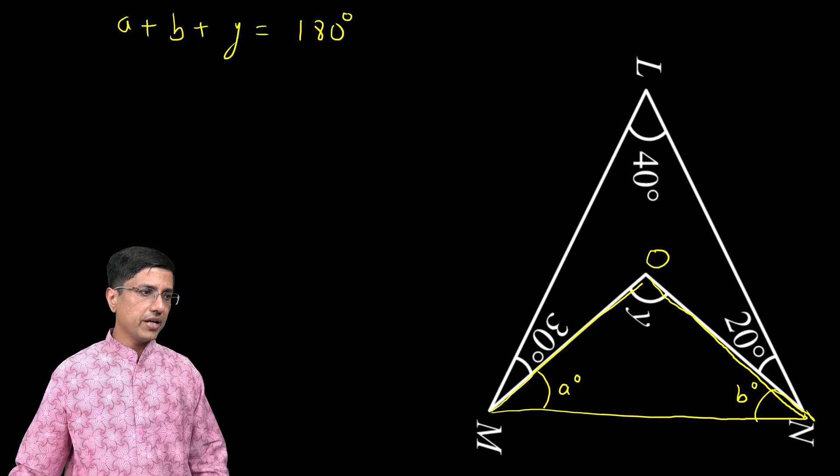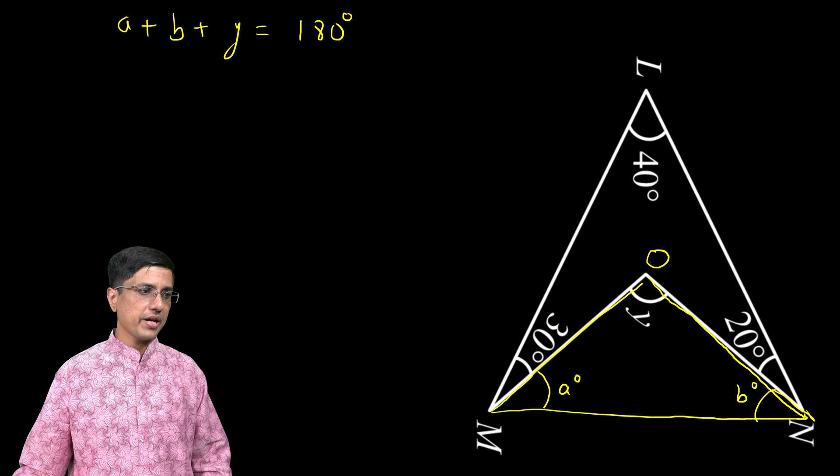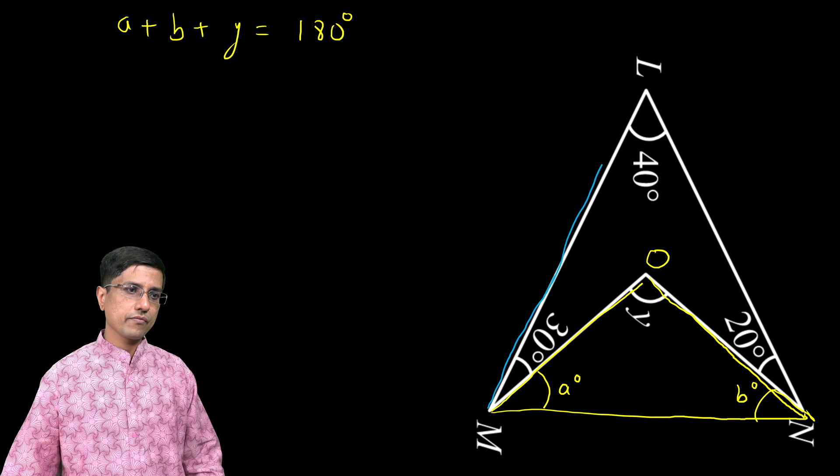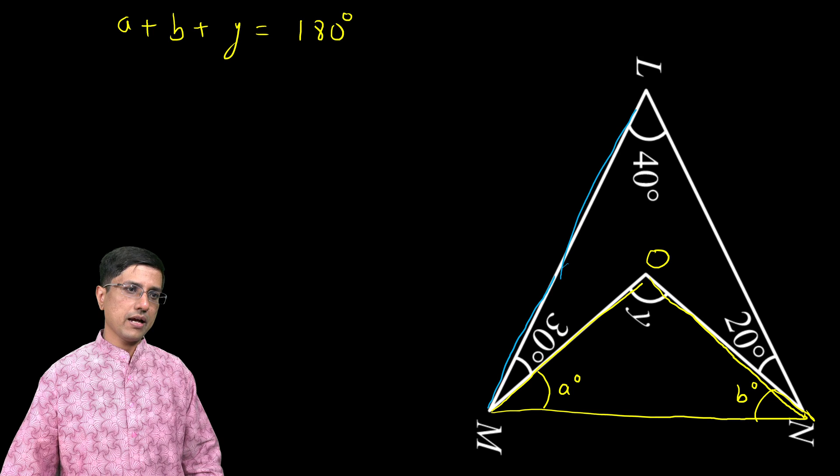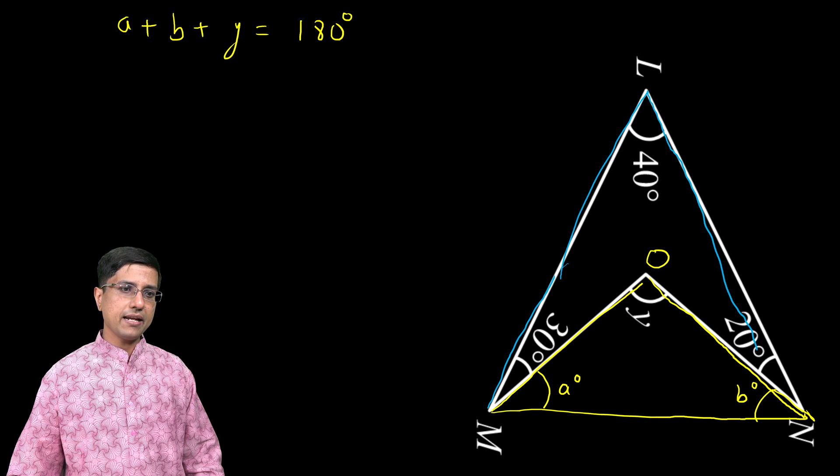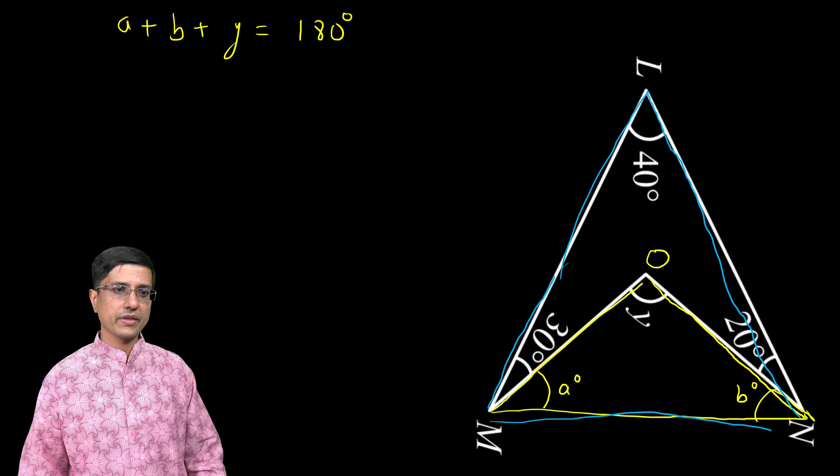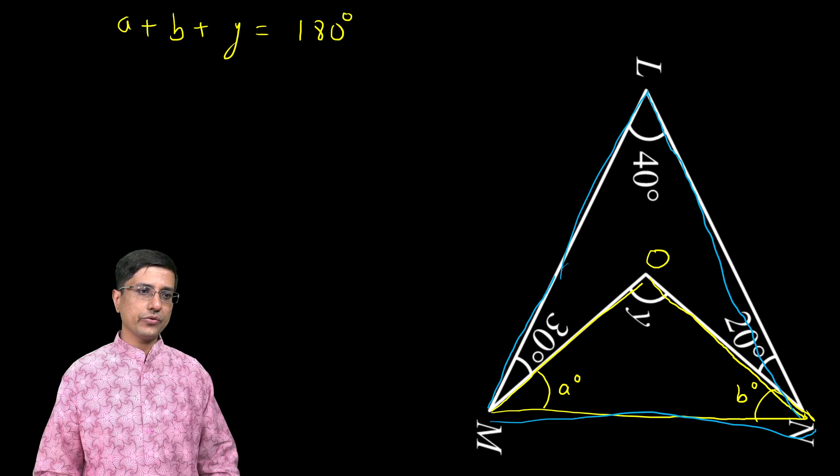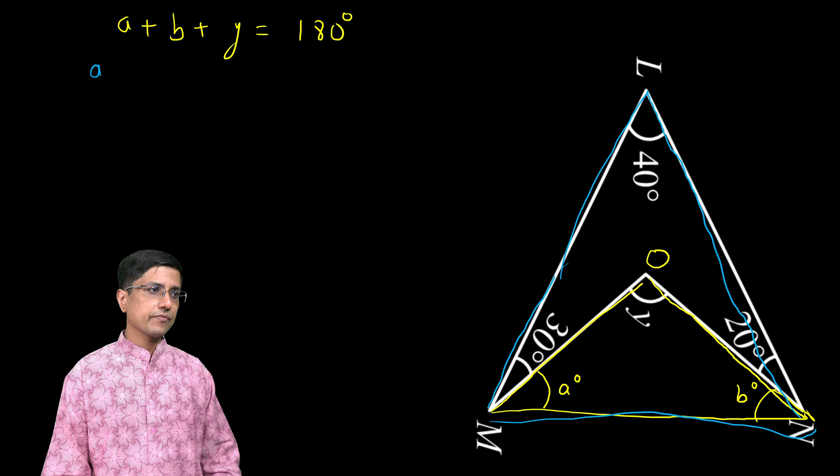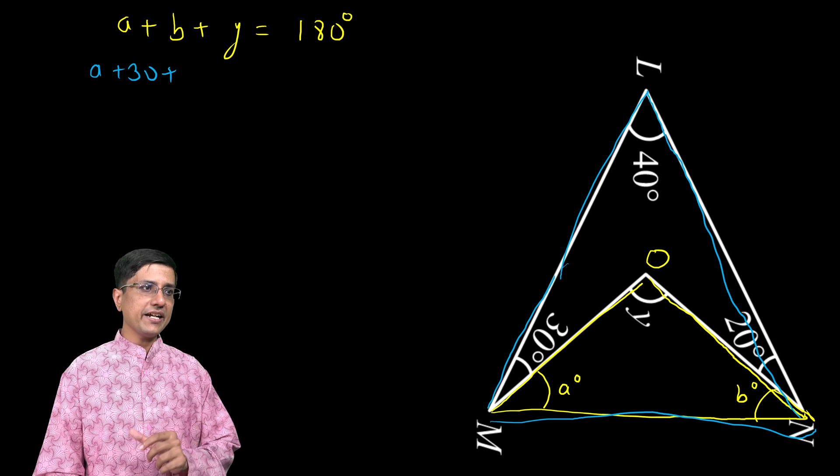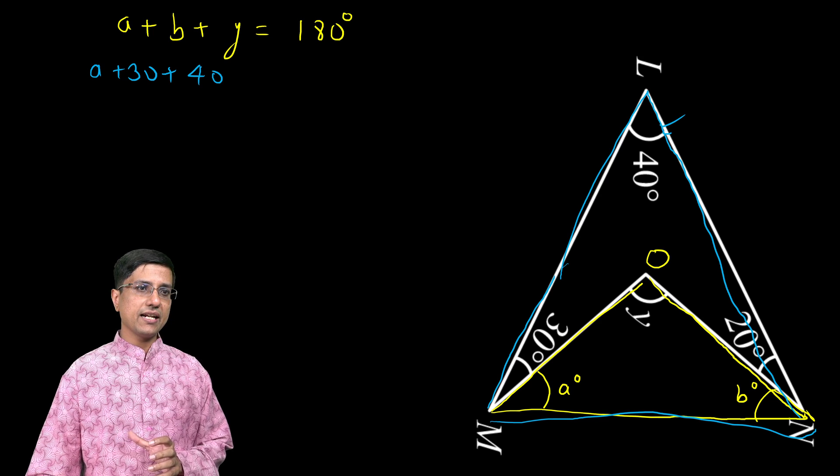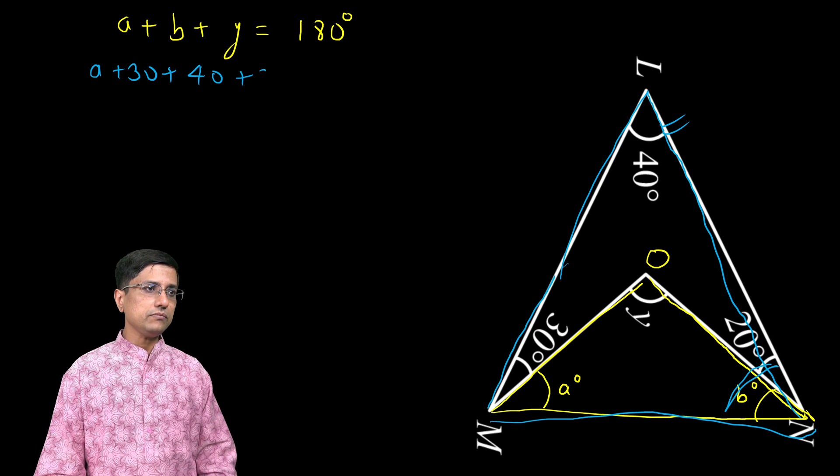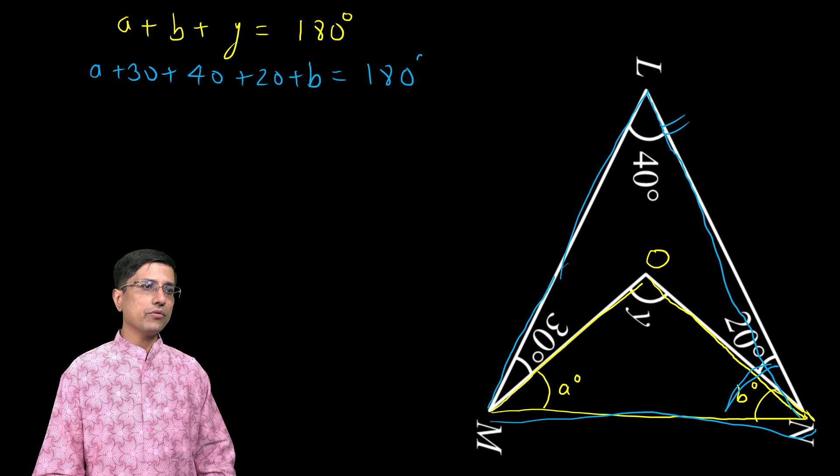And the other triangle is this bigger one. So there is this bigger triangle L, M, N. This is the other triangle, the bigger one. And in this case, again I write down the sum of the angles. So the first angle is this one, a + 30, plus the second one is 40, the top one, the angle L. And the last one is these two together, 20 + b. And this also would be equal to 180 degrees.